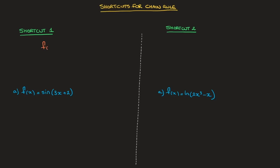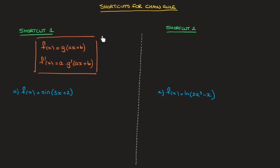If a function f of x is equal to g of ax plus b, then its derivative f dash of x is equal to a times g dash of ax plus b. And I'll go ahead and box that result. This result is really useful as it's going to allow us to quickly differentiate any composite function whose inner function is linear.